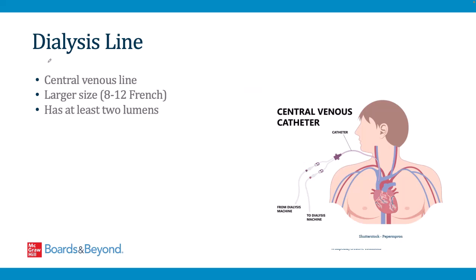Dialysis lines are a special type of central line — larger catheters with two lumens that facilitate the rapid flows required for dialysis. As soon as this line is placed, a patient can start intermittent hemodialysis or continuous veno-venous hemofiltration if they are in the intensive care unit.